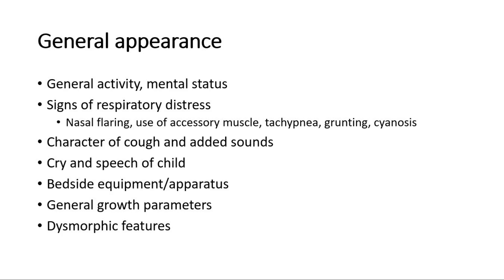If the child is coughing, listen to the character of the cough and also whether there are any added sounds such as stridor or wheezing. Listen to the cry and speech of the child. Look for bedside equipment or apparatus such as nebulizer, oxygen, SpO2 monitoring, sputum port, or any peak flow meter. Assess general growth parameters — whether there is any failure to thrive or short stature — and plot the growth charts if indicated. Look for any presence of dysmorphic features on the child.